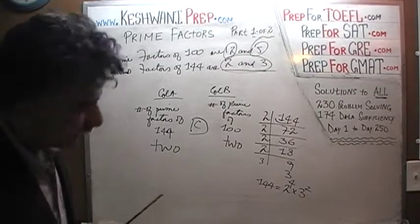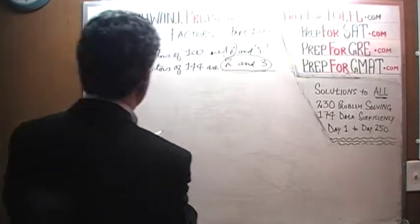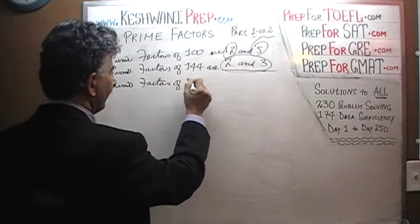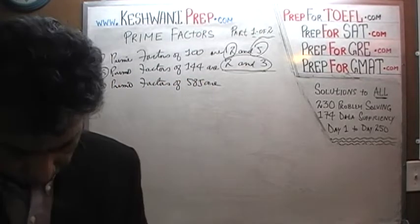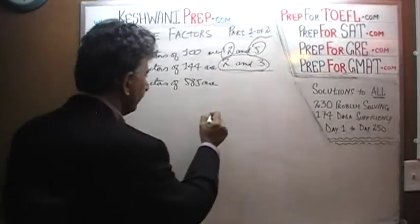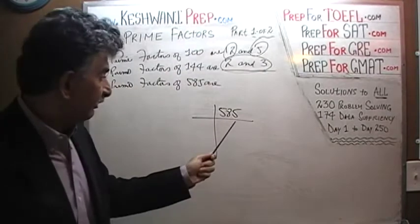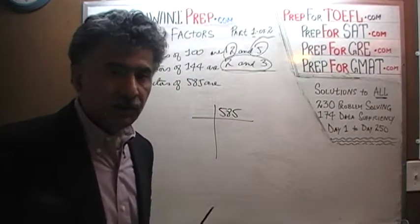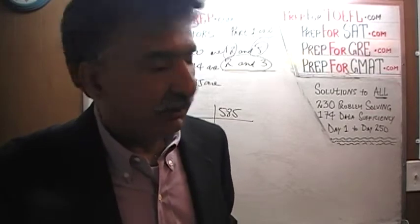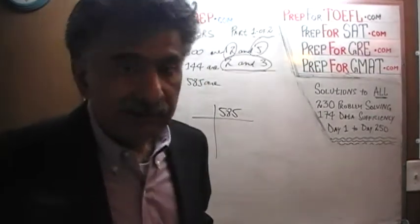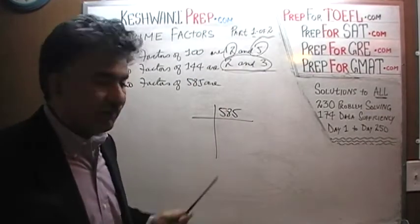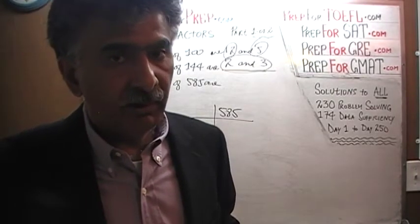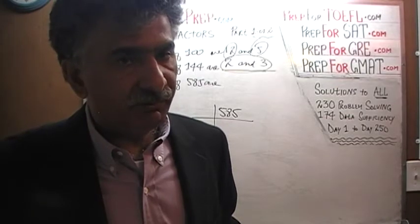Problem number 6: the prime factors of 585. Why don't you do that yourself? Remember, just because you see a 5 at the end, don't jump to dividing by 5. We must first see if we can divide by a lower prime factor. Obviously we can't divide by 2. Is 585 divisible by 3? Let's check: 5 plus 5 plus 8 is 18, and 18 is divisible by 3. Therefore, 585 is divisible by 3, so we must divide by 3 first before worrying about 5.